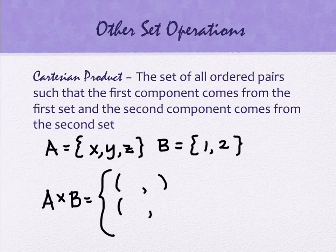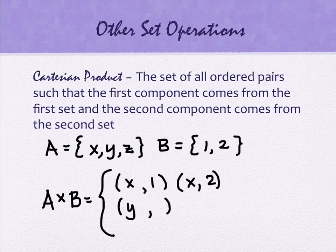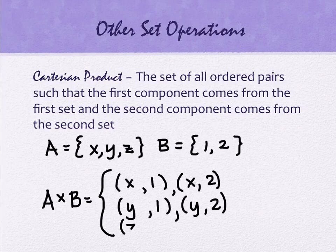So what I'm going to have is I'm going to have ordered pairs in my set. They aren't going to be single elements. They're going to be ordered pairs, like this. They're ordered pairs such that the first component comes from the first set. So that would be like X. And the second component comes from the second set, so that would be like 1. But if I can pair up X with 1, I can also pair up X with 2. But I don't have to have X. I could have Y. And I could pair Y up with 1, or Y up with 2. Or I could pair up Z1 and Z2.